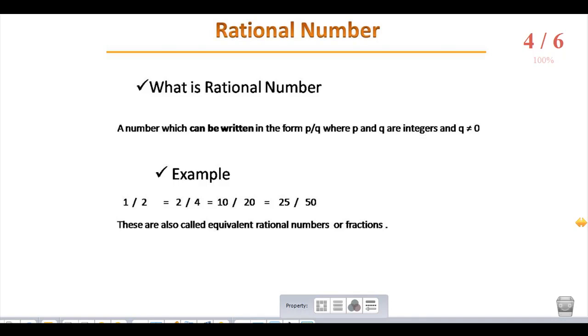Look at the example given here: 1 by 2, 2 by 4, 10 by 20, 25 by 50 are some examples for rational numbers, and they are also called equivalent rational numbers or fractions.